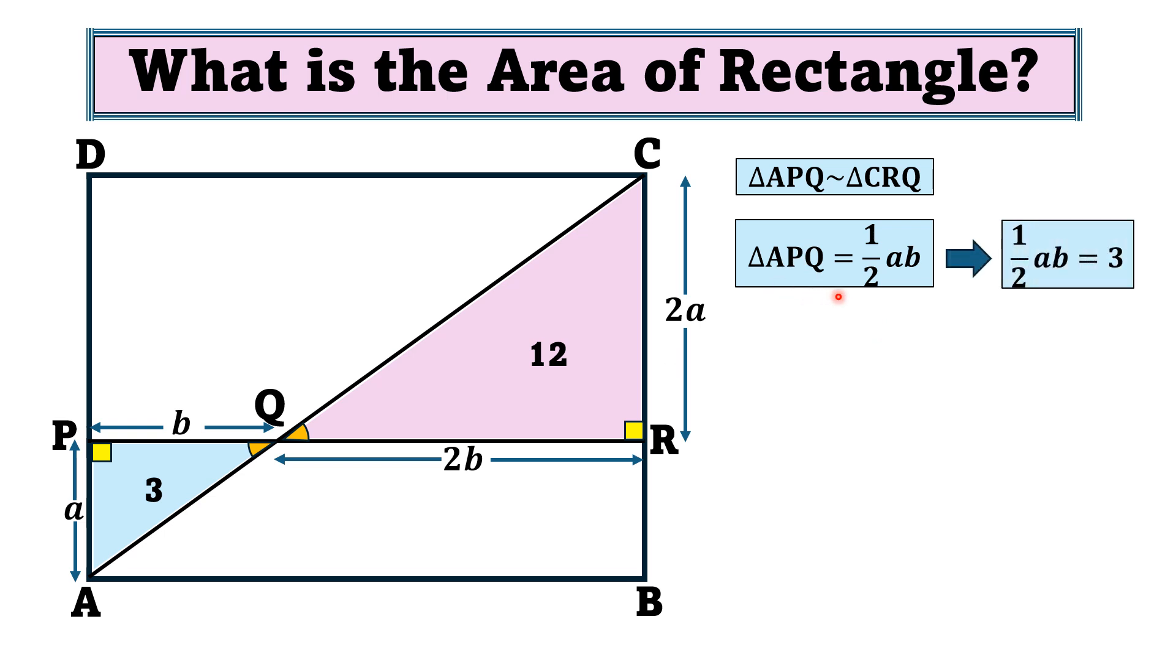So substituting here, we get 1/2 ab = 3. And if we multiply by 2 on both sides, we get ab = 6.